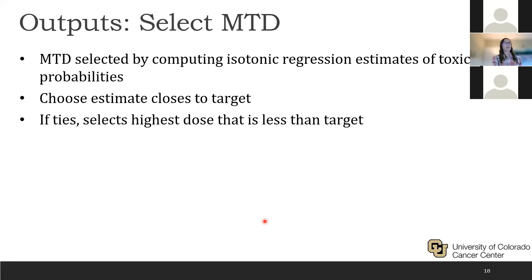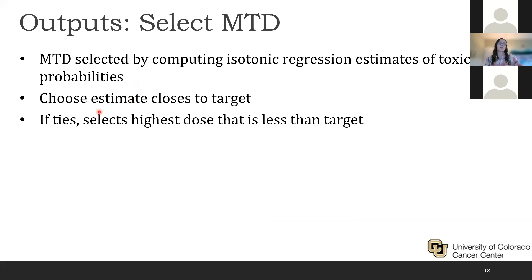At this point, after running through the entire trial, it is time to select the maximum tolerated dose. This process is entirely separate from the escalation and de-escalation rules. The idea is to use a nonparametric regression technique called isotonic regression to estimate the toxicity probabilities of each dose level, then choose the estimate closest to the target DLT rate. In cases of ties, the MTD is selected as the highest dose still less than the target DLT rate.